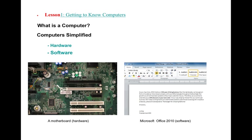Let me give you some examples of hardware: keyboard, mouse, monitor, USB, or camera — these are hardware. For software, examples include Microsoft Office — like Microsoft Word, Excel, PowerPoint — or browsers like Mozilla Firefox, Google Chrome, or other applications. These are all software.